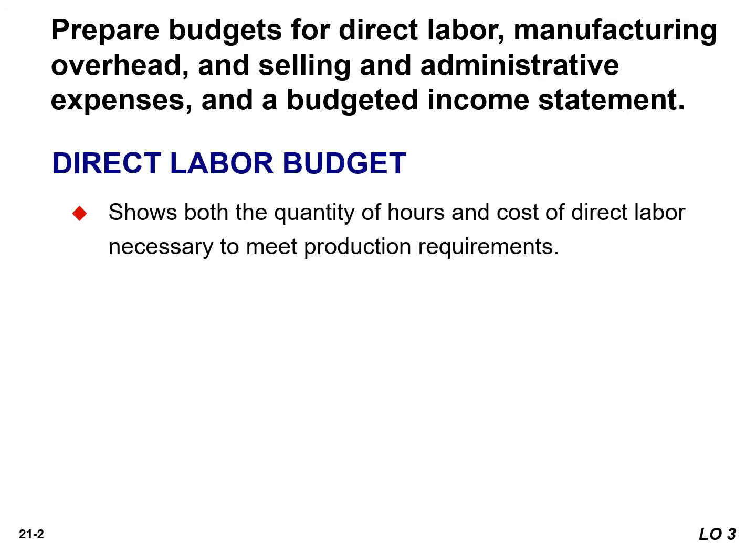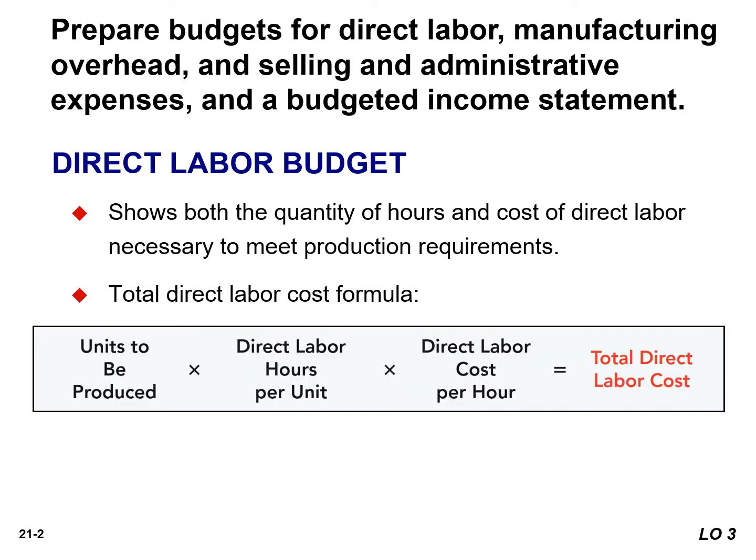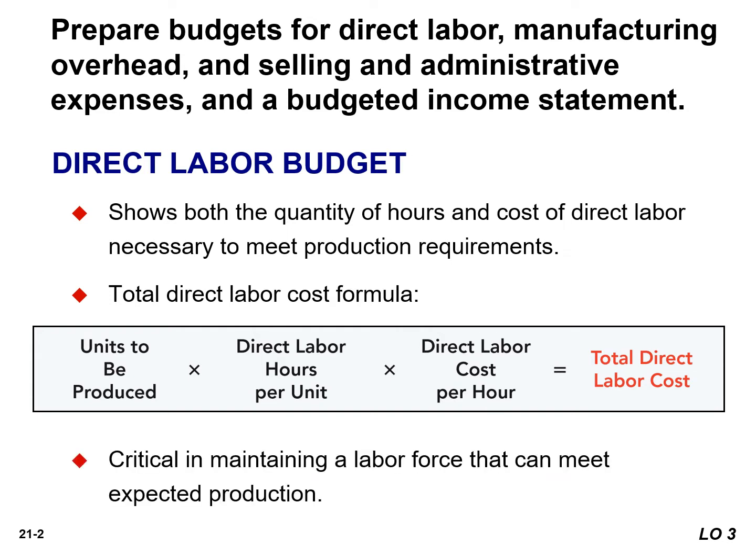Like the direct materials budget, the direct labor budget contains the quantity of hours and the cost of direct labor necessary to meet production requirements. The total direct labor cost is derived from the following formula. The direct labor budget is critical in maintaining a labor force that can meet the expected levels of production.